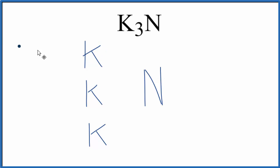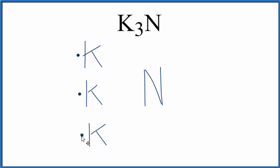Potassium's in group one on the periodic table, so it only has one valence electron. So each one of these potassiums has one valence electron. Nitrogen is in group 15, sometimes called 5A, and it has five valence electrons.